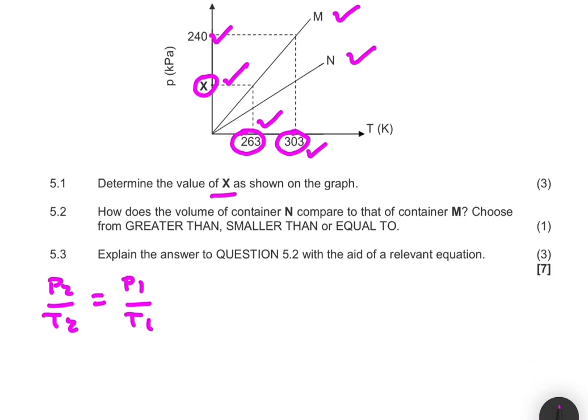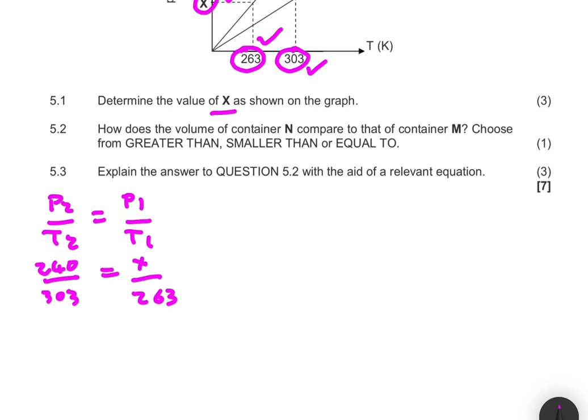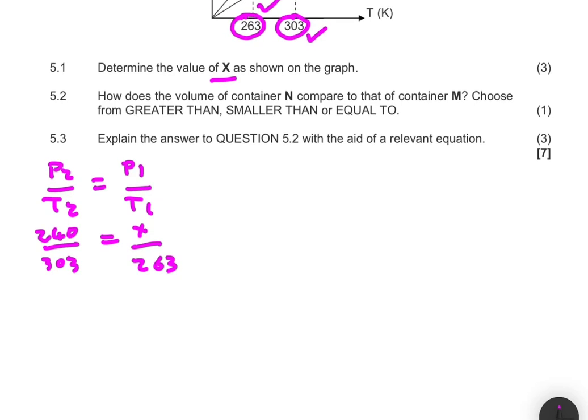If we cross multiply, we're going to get 240 multiplied by 263 equals X multiplied by 303.